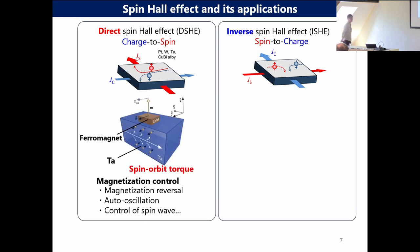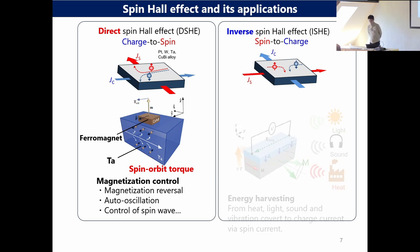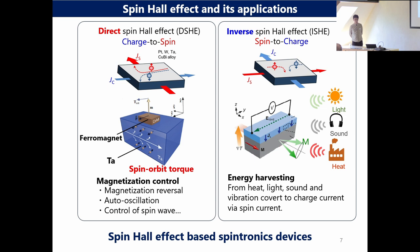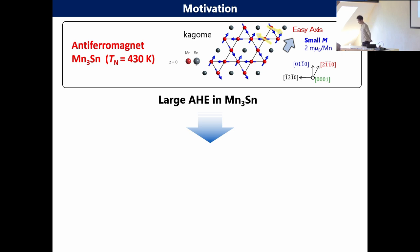By using this spin Hall effect, we can do the magnetization control by using the spin-orbit torque, as shown here. As a result, we can do the magnetization reversal and the control of spin waves. And of course, by using the inverse spin Hall effect, we can do energy harvesting from light, sound, and heat — we can excite the magnetization dynamics in the ferromagnet layer, and this magnetization dynamics can excite the spin current, and as a result we can convert the spin current to the charge current by using the inverse spin Hall effect. So these kinds of spin Hall effect-based spintronic devices are very important.